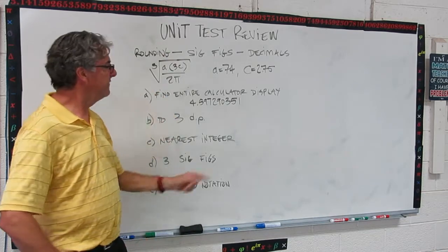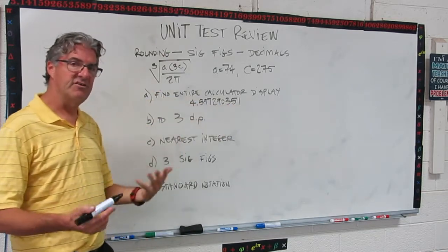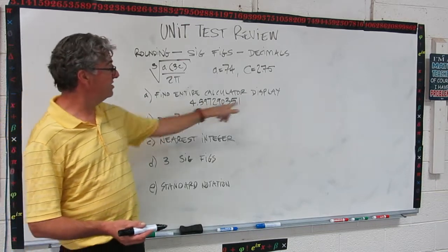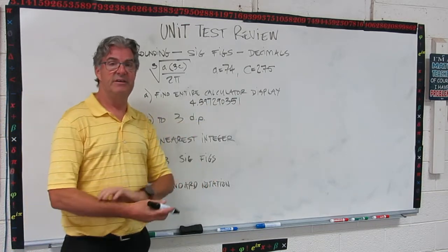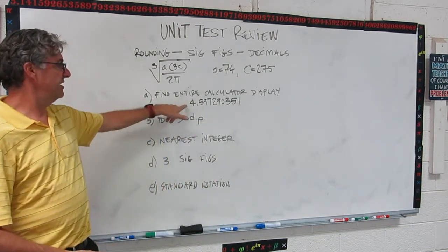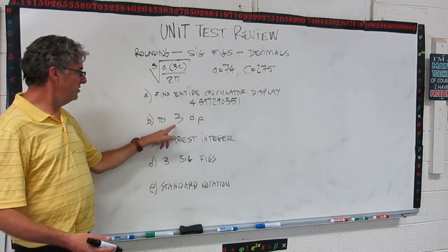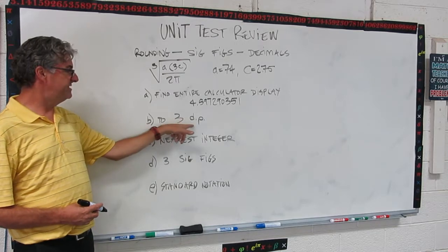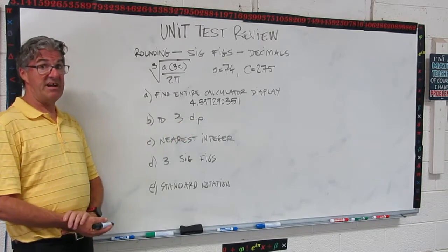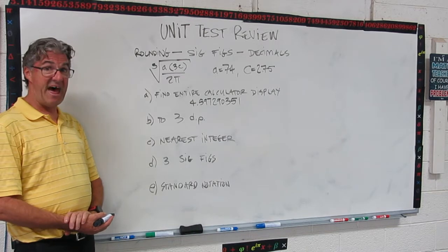4.597290351. So check that. If your last digit's a little different, maybe that's how your calculator rounded it. Or maybe your calculator shows more digits or less digits. So just take a look at your result and make sure it matches that. Okay, next task. Show this number to 3DP. I'm hoping you remember that because I'm not going to tell you right away. Go ahead and try that.